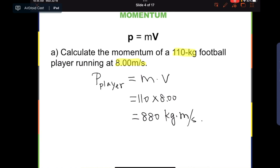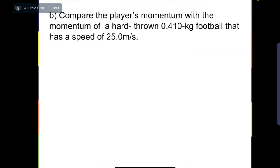Let's look at another example. This one says, compare the player's momentum with the momentum of a hard-thrown 0.410 kg football that has a speed of 25.0 meters per second. First, we need to find out the momentum of the football before we can compare with the player's momentum.